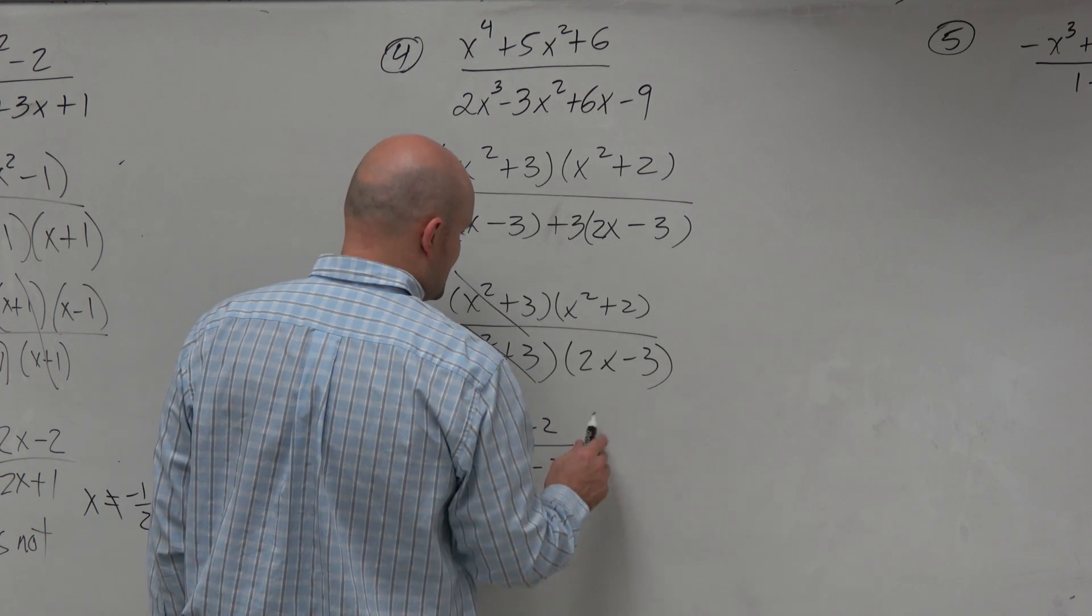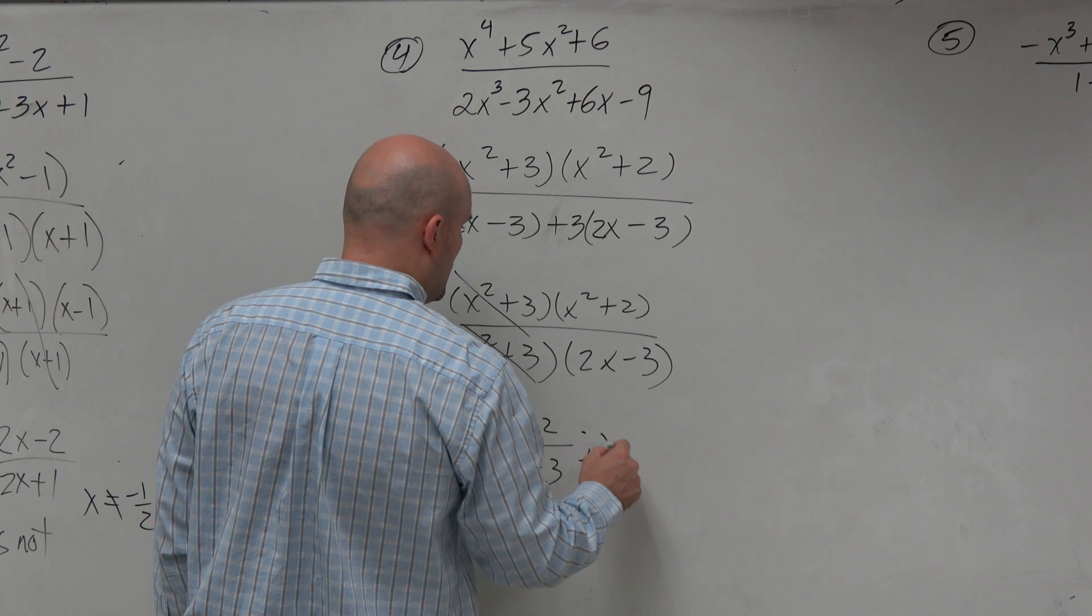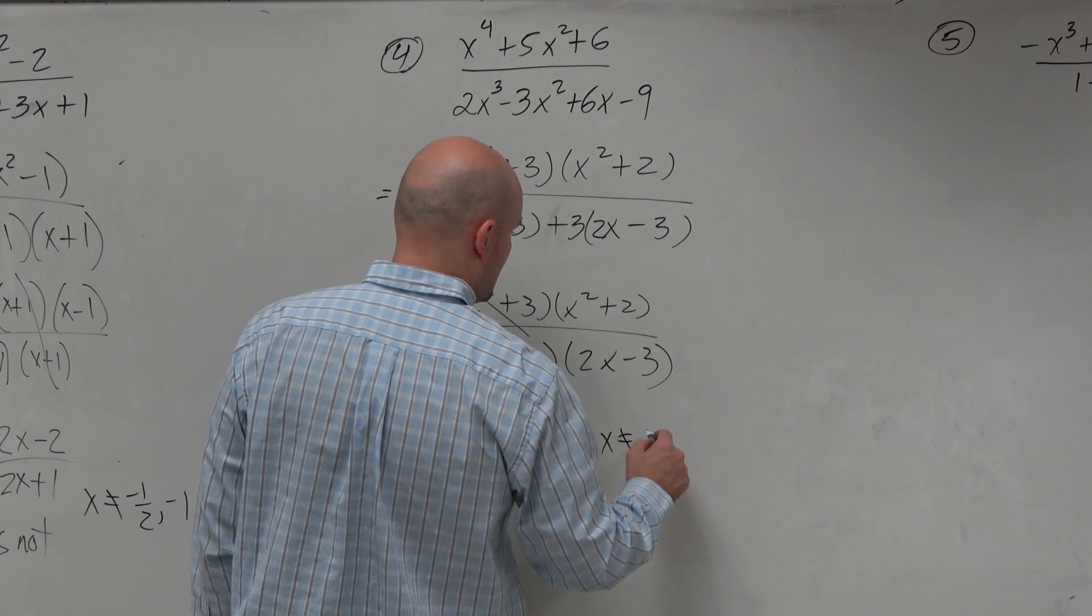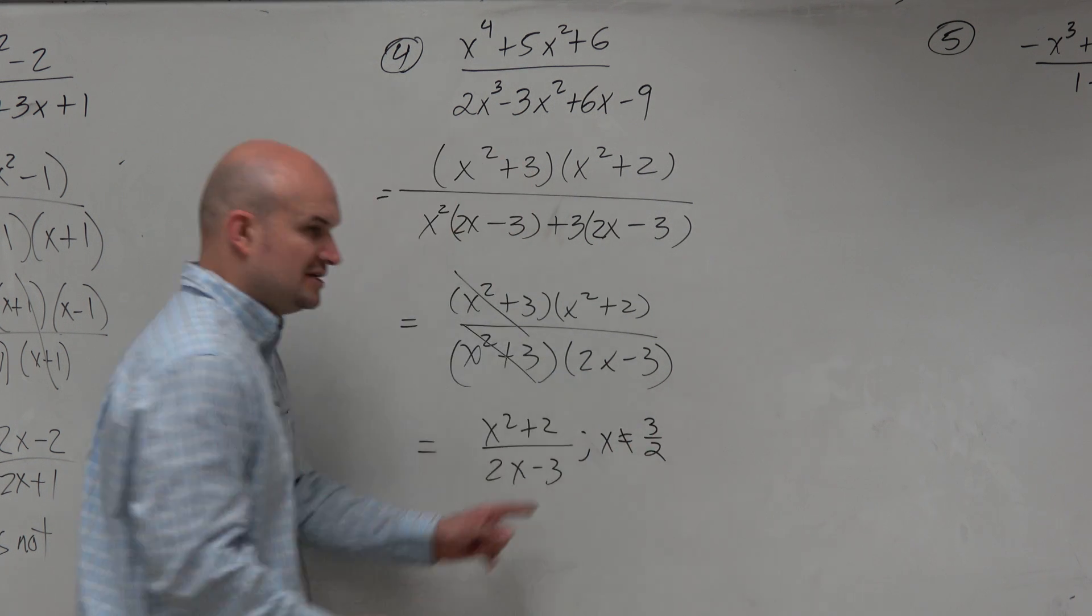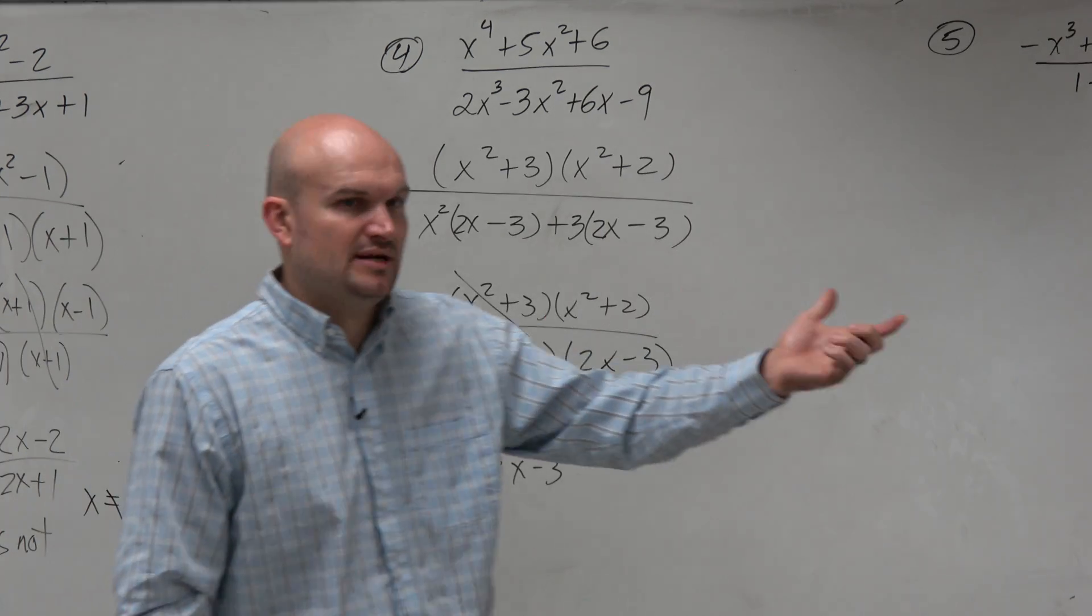Now, my x, I have only one restricted value, which is 3 halves, right? Because you set 2x minus 3 equal to 0, you'd get positive 3 halves.